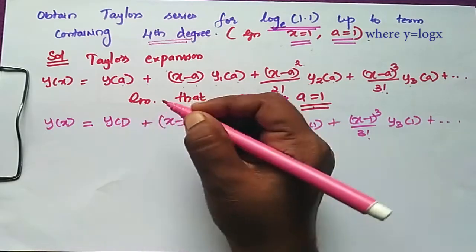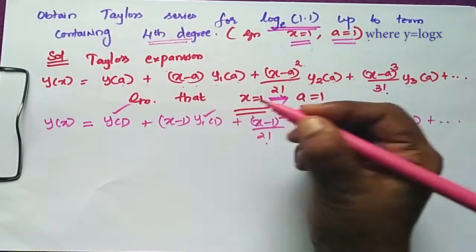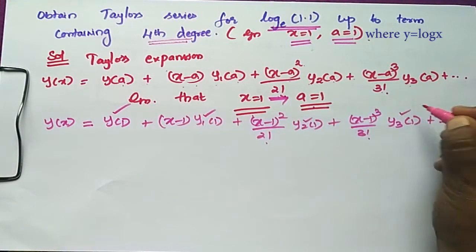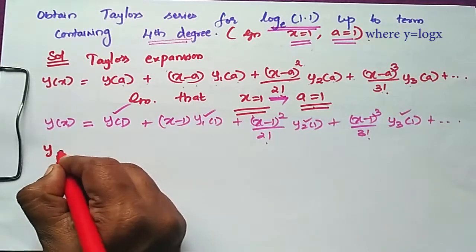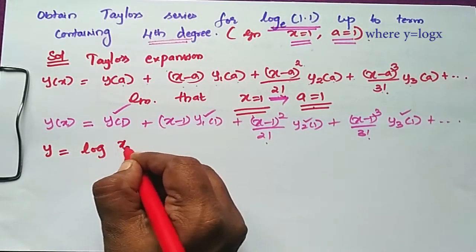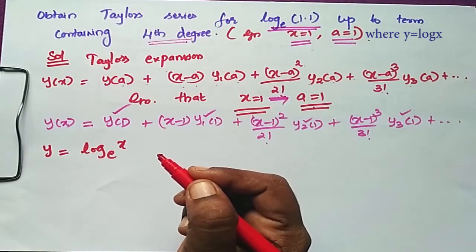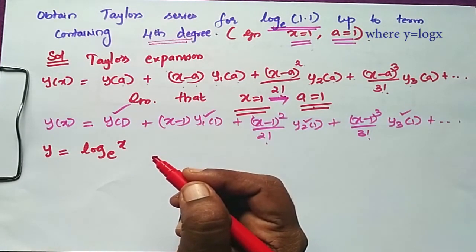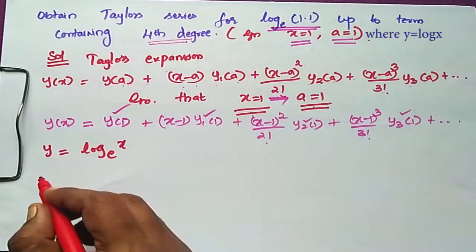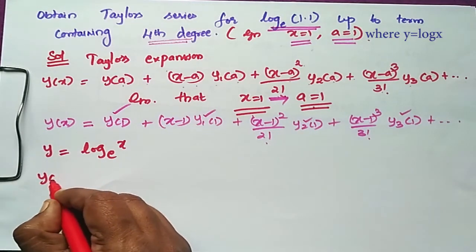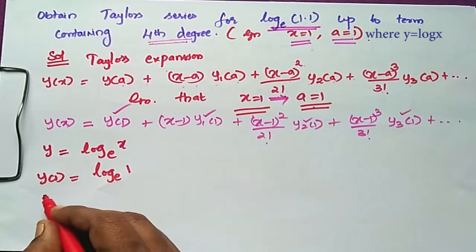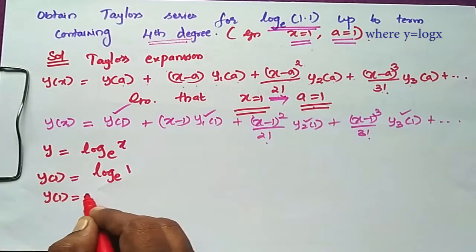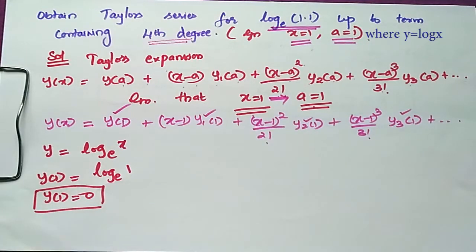Now we are going to find y(1), y₁(1), y₂(1), y₃(1), y₄(1), etc. We have y = log x to base e. So y(1) = log(1) to base e, which equals 0, since log 1 is always 0.